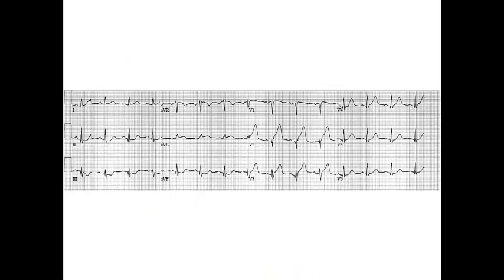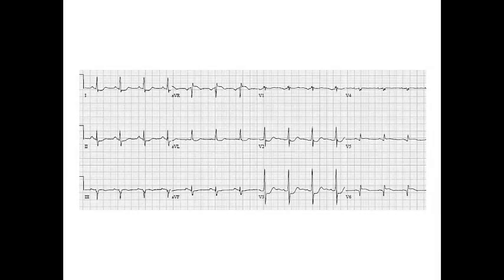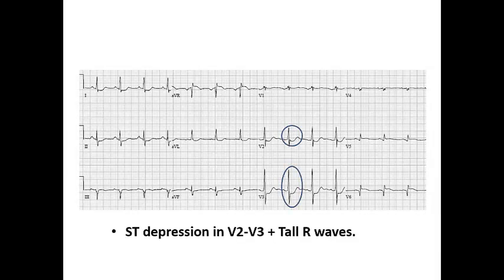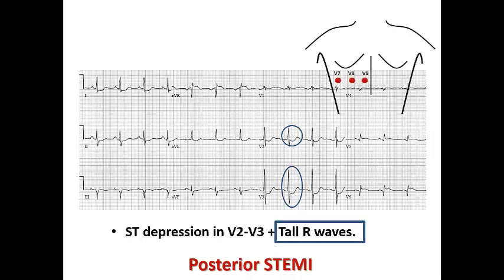In another example, we see ST depression in inferior leads with ST elevation in lateral leads, indicating high lateral STEMI. Here, ST depression in inferior leads accompanies ST elevation in V1 to V3, indicating anteroseptal STEMI. And in this ECG, ST depression in V2 and V3 with a tall R wave and hyperacute T wave — this reminds us of posterior STEMI. Placing posterior ECG leads (V7, V8, V9) for this patient would detect ST elevation, confirming posterior STEMI.